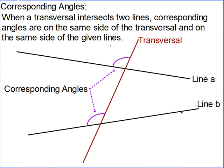Today we're going to do something different — we're going to add an additional line. When you have two lines that are crossed by another line, the line that crosses both of those is called the transversal. The definition basically says that corresponding angles will be on the same side of the transversal and on the same side of their respective lines. This angle is on the top of line A and also on the top of line B.